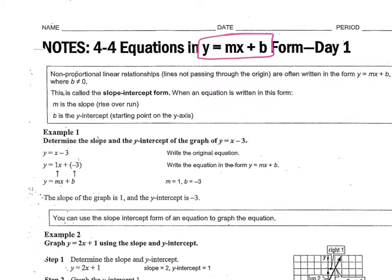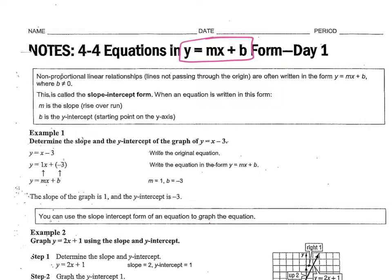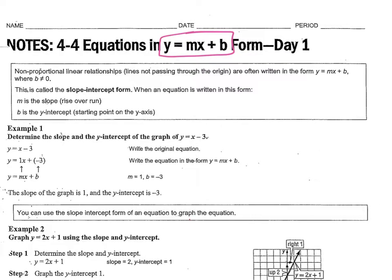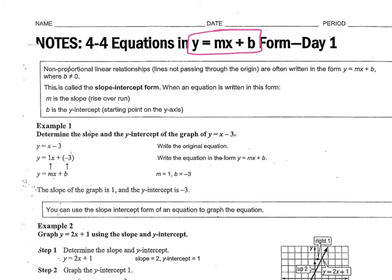So non-proportional linear relationships, lines not passing through the origin, are often written in that equation, y equals mx plus b, where b is anything but zero.